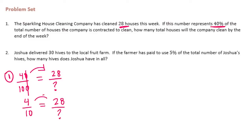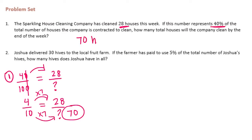So 4 tenths is equal to 28 over the unknown. I can easily multiply 4 times 7 to get 28, and 10 times 7 would be 70. So the total number of houses would be 70 houses.